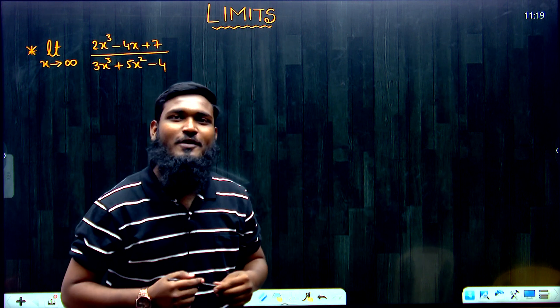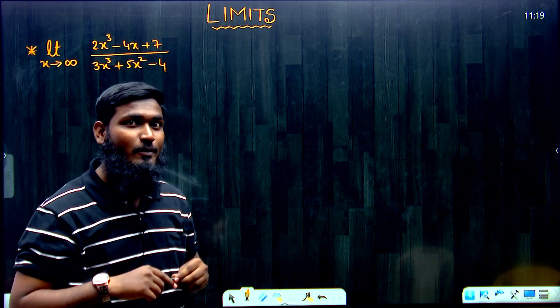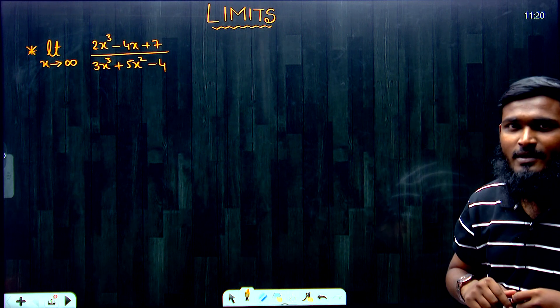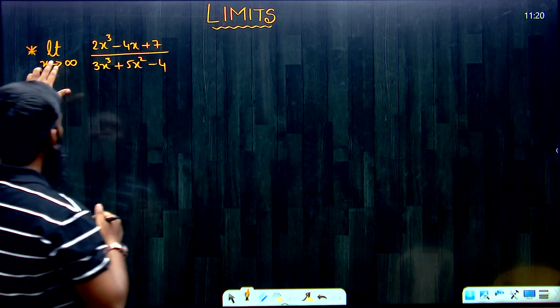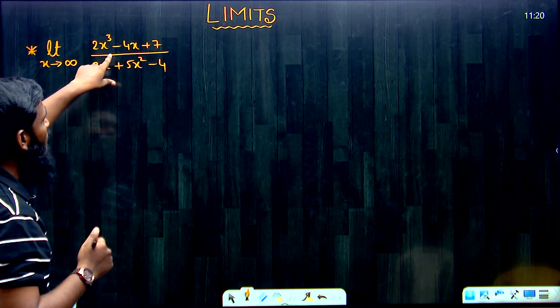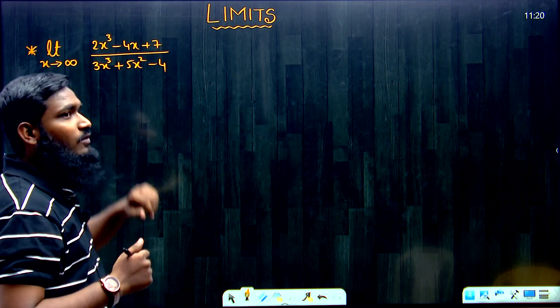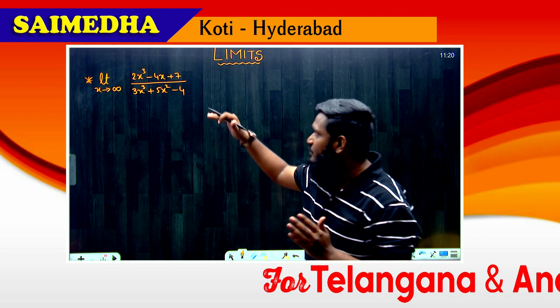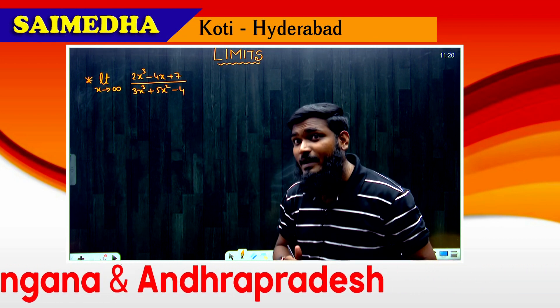Hello, this is Mohammad Dinatullah from the Saimera Coaching Center, Koti Hyderabad. In our previous videos we discussed some shortcuts related to the topic of limits. Now we'll be discussing some more shortcuts on limits. Let us start with: limit x tends to infinity of (2x³ - 4x + 7) divided by (3x³ + 4x² + 5x² - 4). First we'll discuss the actual procedure, then we'll discuss the shortcut.